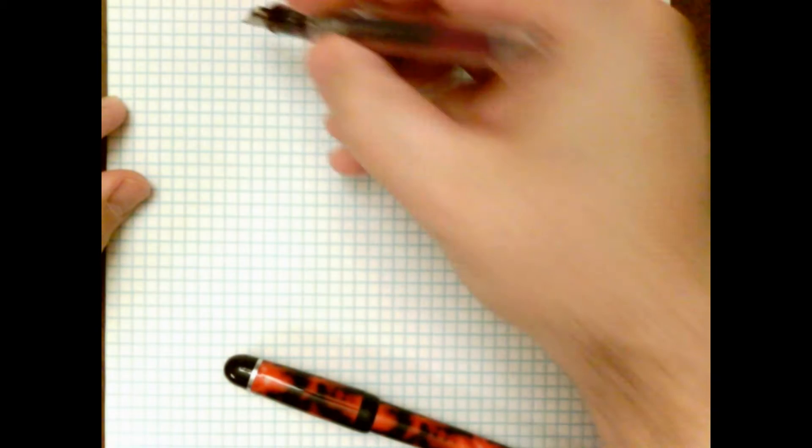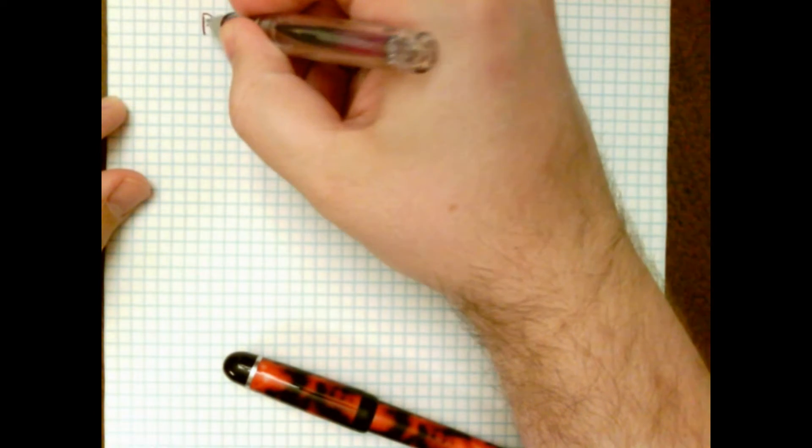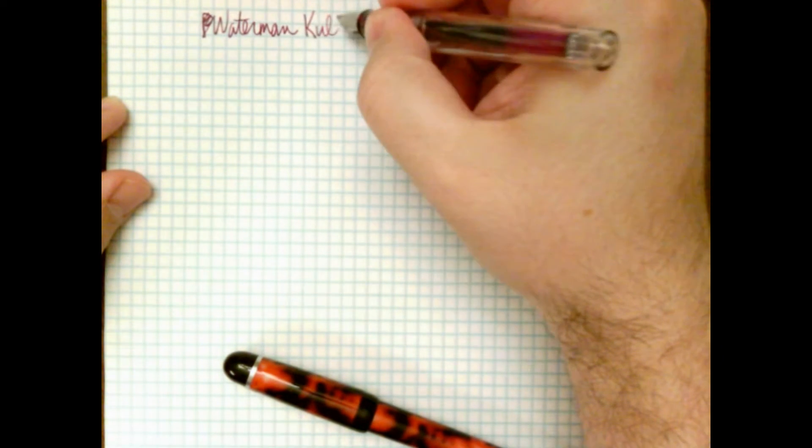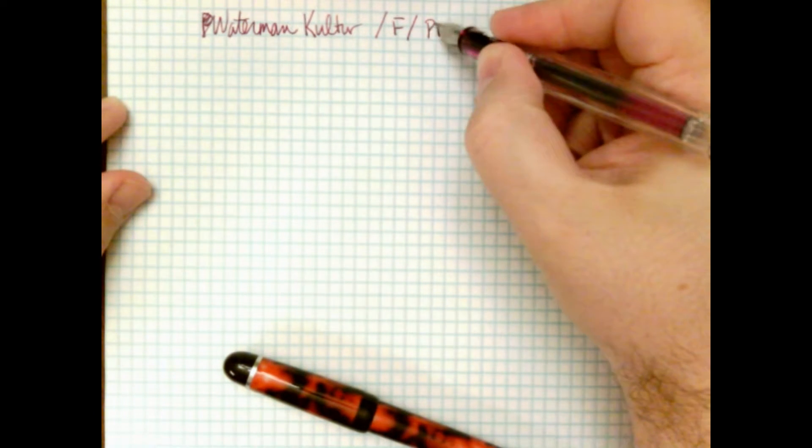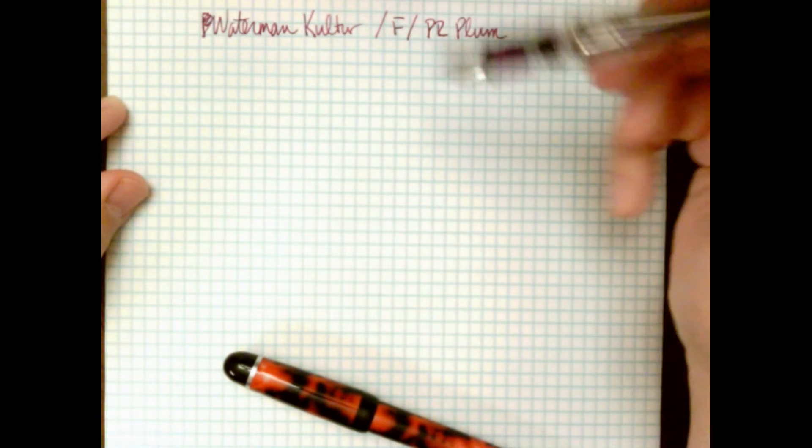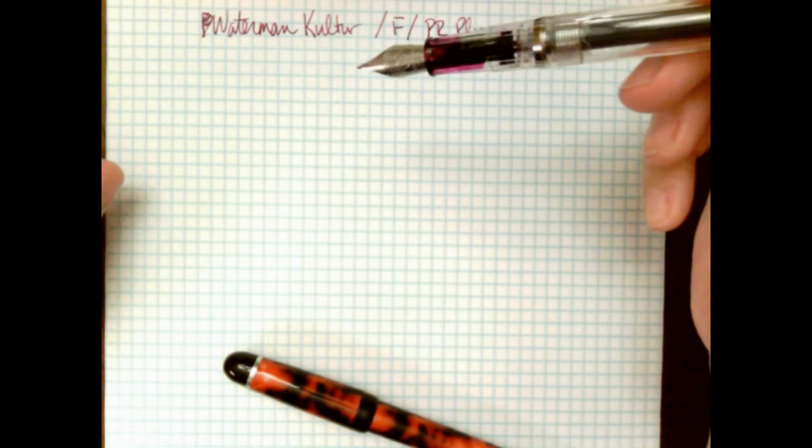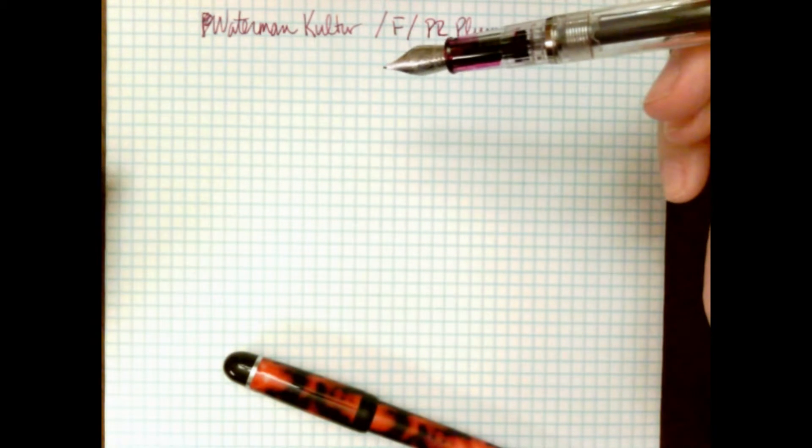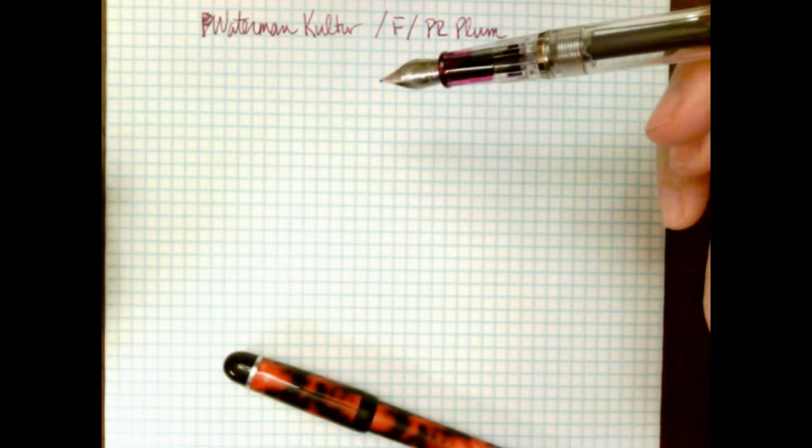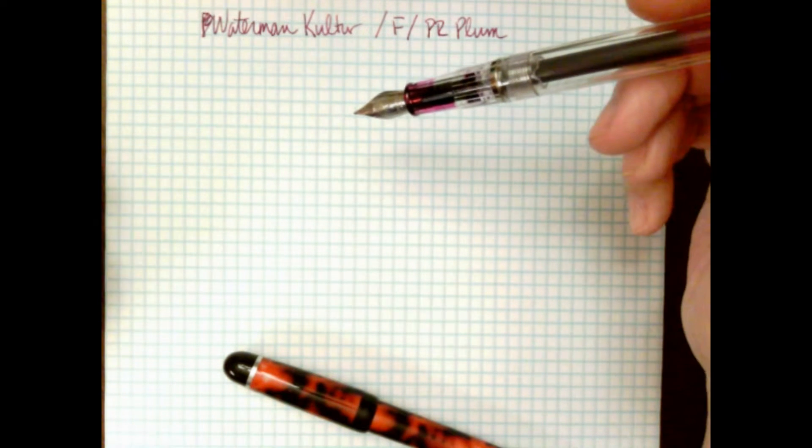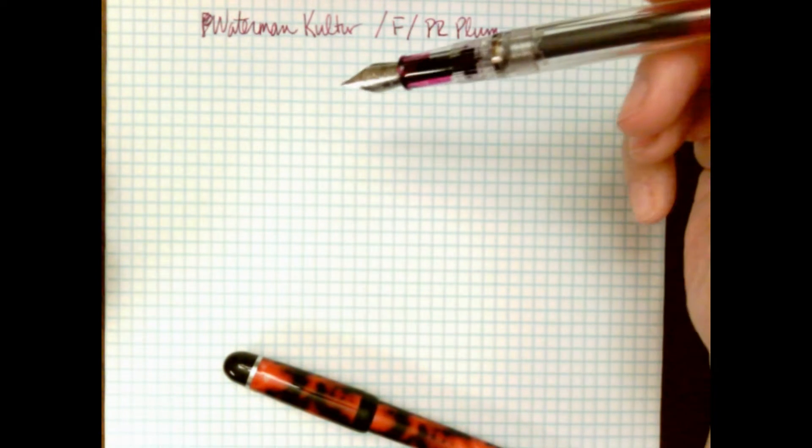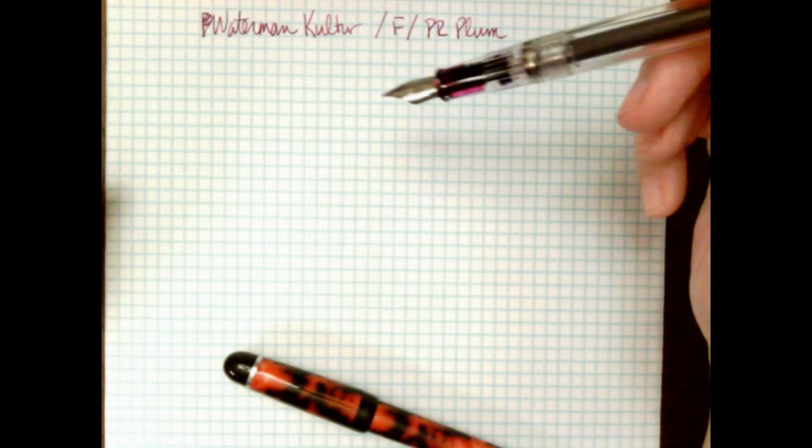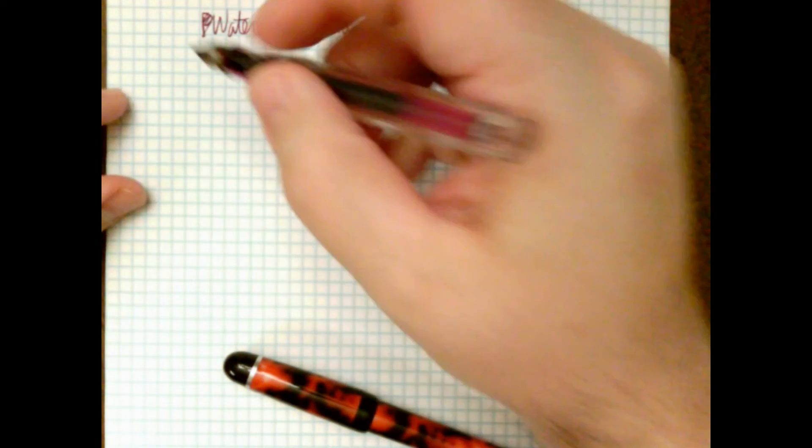But let's try and give this a writing sample here. So this is a Waterman. We are calling this one the Couture. And it's a fine nib. And this is Private Reserve Plum. And the long cartridges that are kind of hard to find. This is actually the last one in my box. So I'm going to have to go back on Amazon or whoever and find a supplier. Because none of my sort of normal suppliers seems to carry it. But I like the color. And I like having long cartridges. So I'm going to try and see if I can't dig up some more of these things.